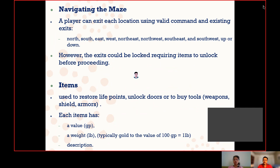The player can navigate around the maze using valid commands. Normally there are two commands: 'go' and 'move'. If they put in a command like 'move north' and there is an exit, they will actually move to the other location. The available directions are north, south, east, west, northeast, and so on.